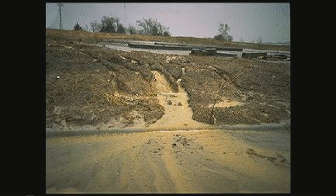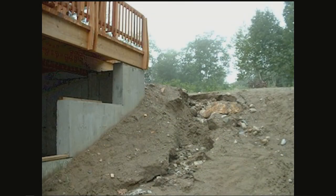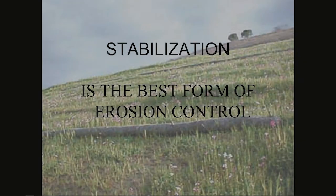Here are some examples of gullies we want to prevent. In this picture, you can see a big wash coming from the construction site running right out onto the road — no controls in place and sediment is just going where it wants to go. Control the water and you can control the sediment. Here's a large gully that formed around the foundation of a house — again, control the water where you want it to go, slow the water as it flows, and you slow the erosion potential. If nothing else from this presentation: stabilization. Please understand that stabilization is the best form of erosion control.